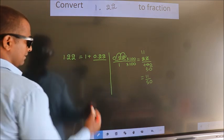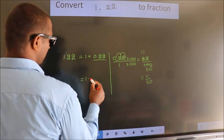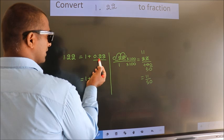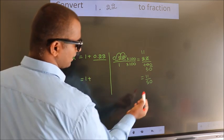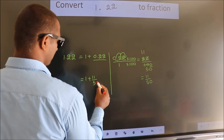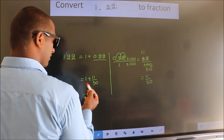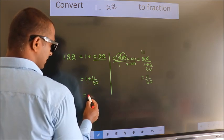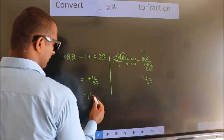Now here, 1 plus in place of 0.22, I write 11 by 50. 1 plus 11 by 50 in mixed fraction is 1 and 11 by 50.